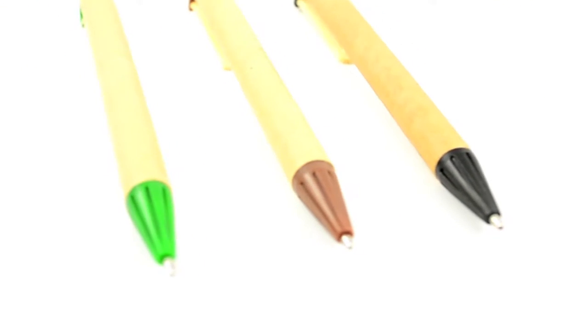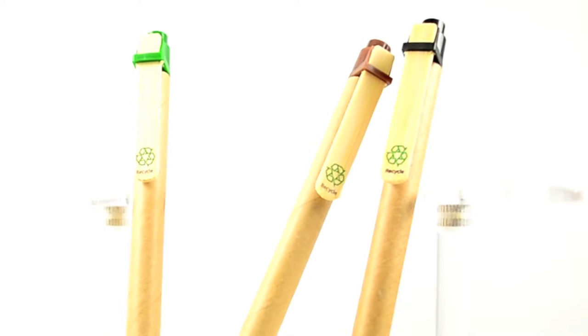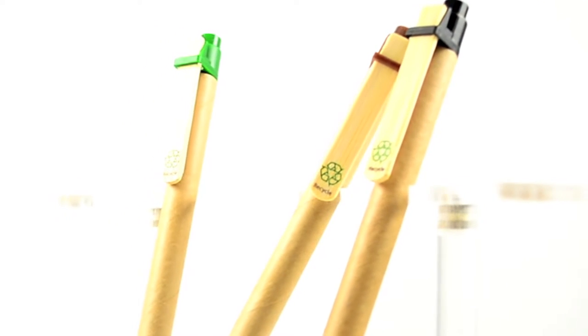The point guard tip and button clicker are made of recycled plastic, and to dress them up we add a pocket clip that's made completely of bamboo. On the bamboo pocket clip there's even a green recycle symbol.